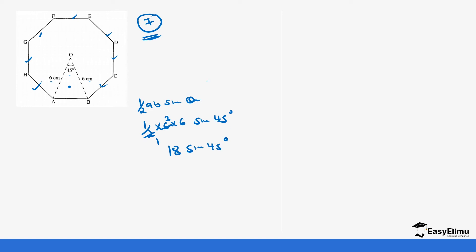You can use the long method or read sin(45°) directly from the tables. sin(45°) = 0.7071. Multiplying: 18 × 0.7071 = 12.7278.